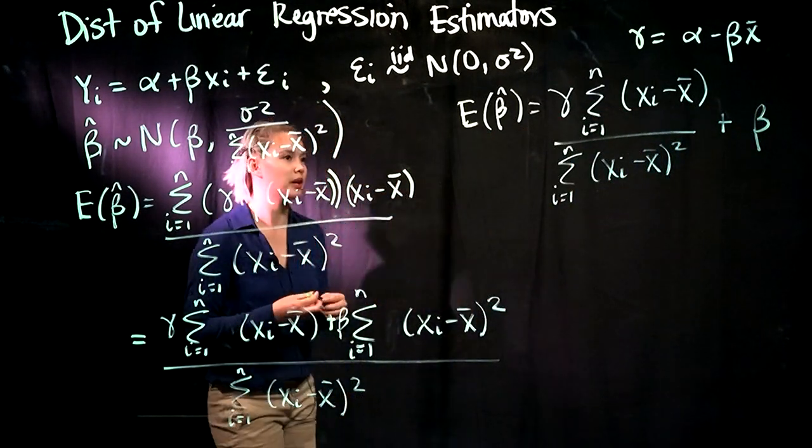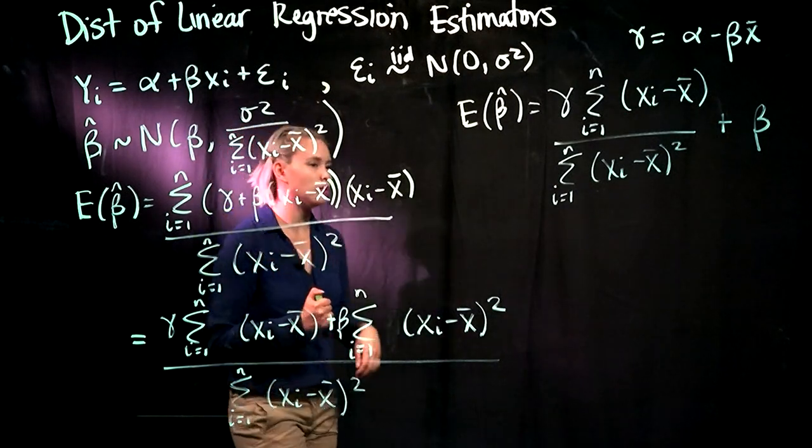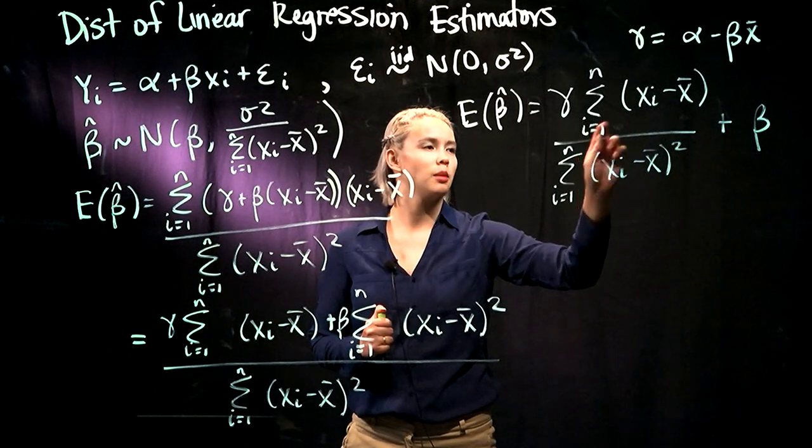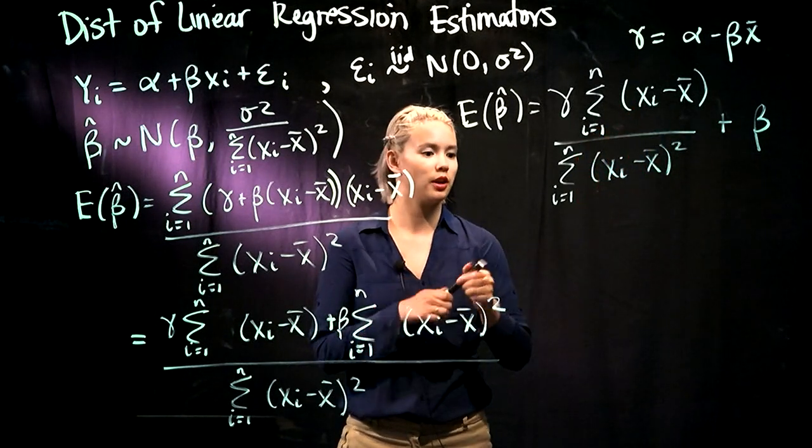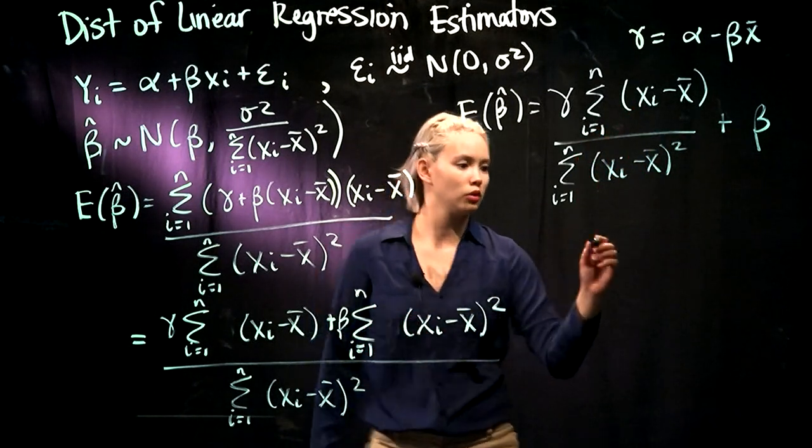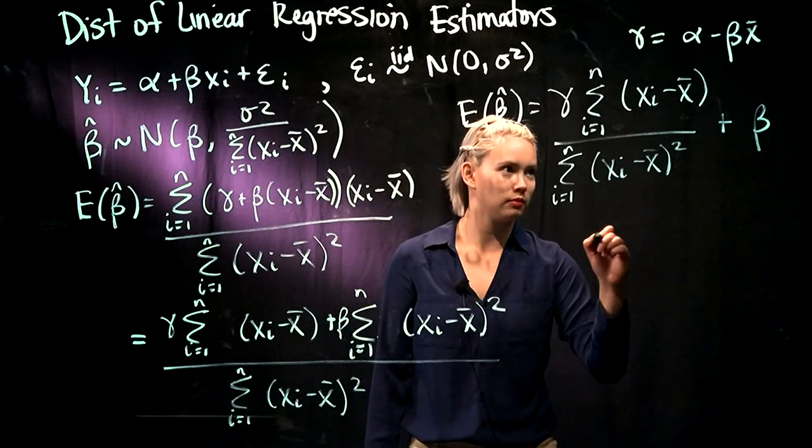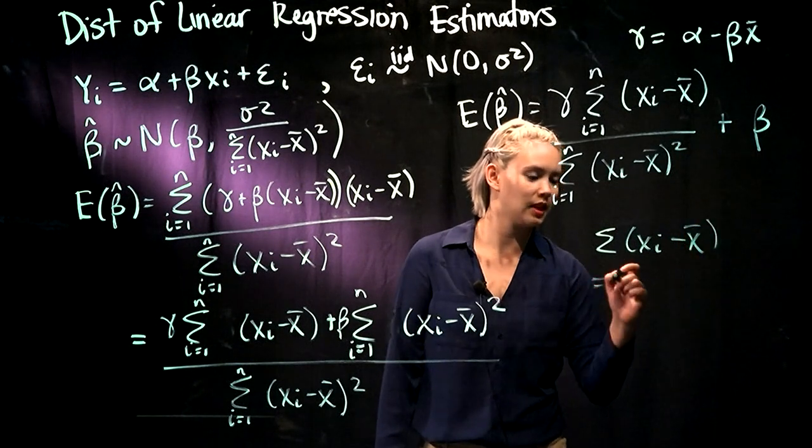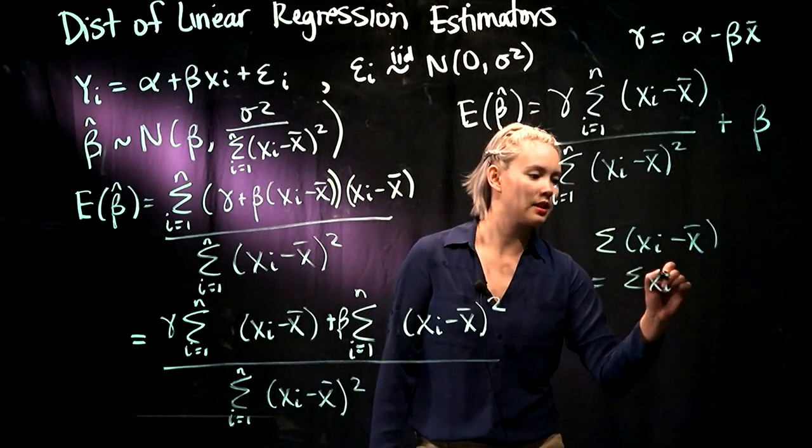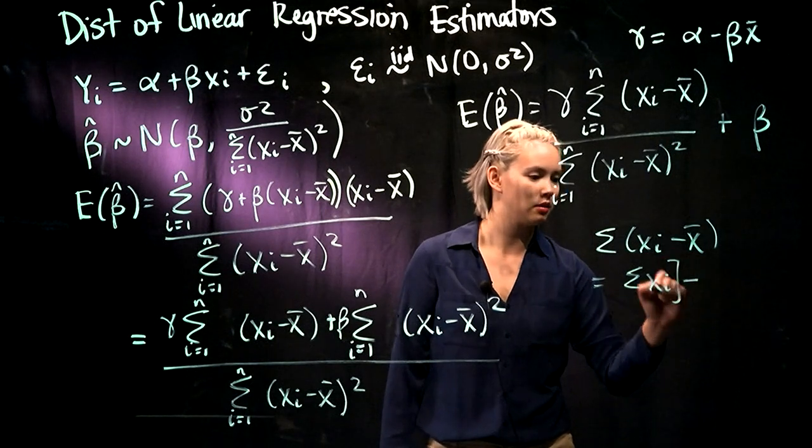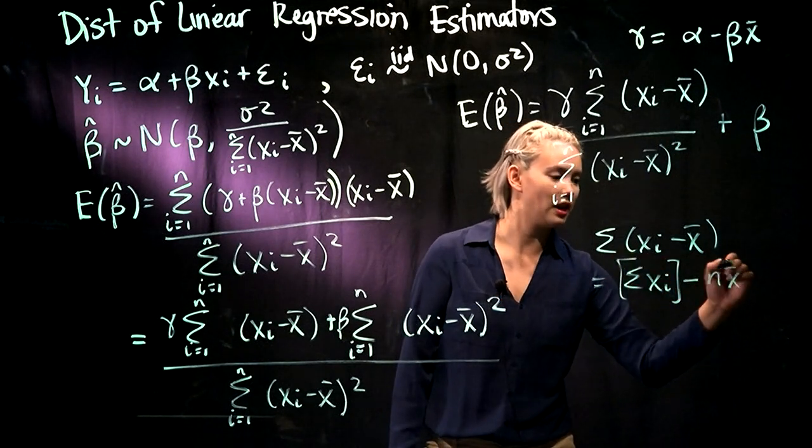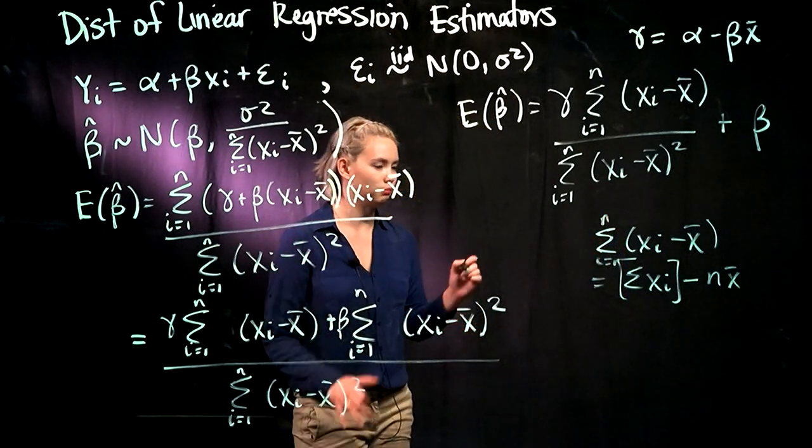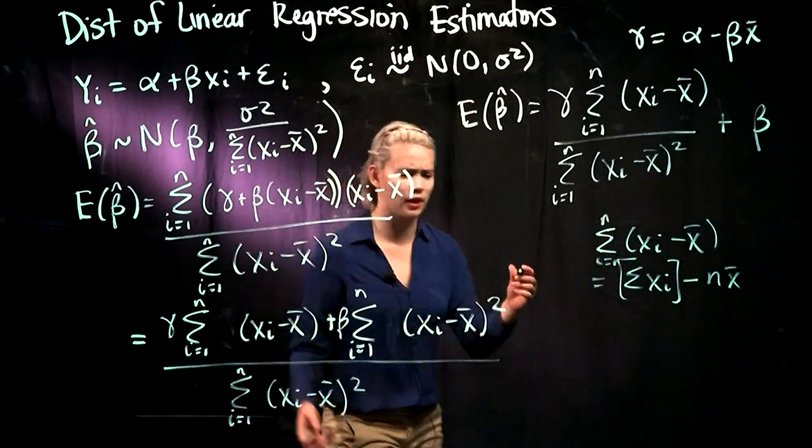So now let's just focus on this numerator here. We're adding up xi minus x bar. So if we think about it, the sum of xi minus x bar, that's the same thing as sum of the xi minus n times x bar. We're adding up x bar n times.